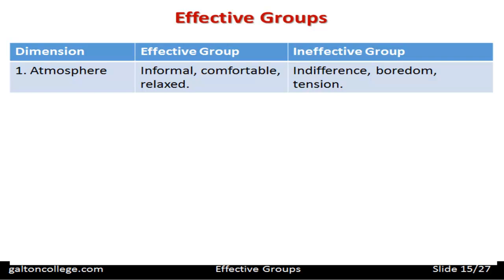When we think of atmosphere, an effective group gives off a feeling of informality — they're comfortable with each other, relaxed about the tasks, and quite at ease. The ineffective group, on the other hand, is indifferent, doesn't really care, and may be bored right from the start, with tension between members, arguments about who's doing what, and infighting from the start.